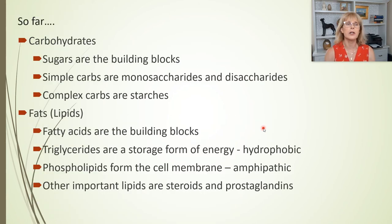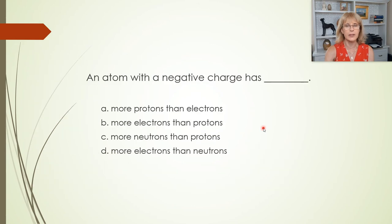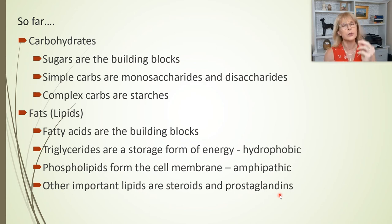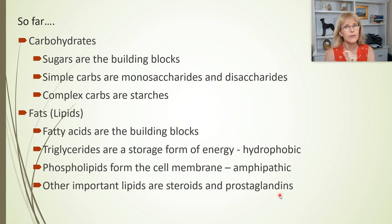So far we've talked about carbohydrates and lipids. Prostaglandins — we won't talk much about them, but prostaglandins are small molecules that are important to the process of inflammation in the human body, and they are also a very tiny lipid.